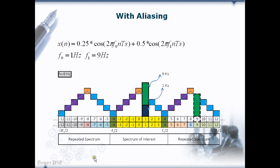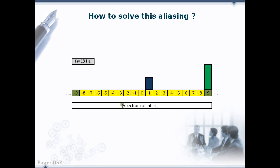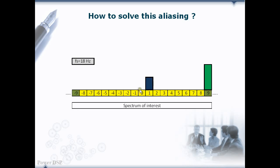So how to avoid this problem? Let's see that in the next slide. If we want to accommodate the 9 Hz signal, then we have to choose the sampling frequency of 18 Hz. The sampling theorem states the sampling rate must be at least greater than or equal to 2 f-max. Here, f-max is 9 Hz and 2 f-max is 18 Hz. With this sampling rate, the spectrum of interest is now from minus 9 to plus 9, so we can accommodate both 1 Hz and 9 Hz without any problem at all.